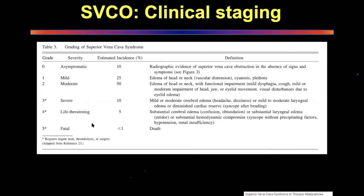In grades four and five you do not go for diagnosis first — you sort out the SVC first. The patient doesn't give you enough time to do a biopsy and get histology. This is a slow insidious growth that suddenly reaches a critical point. These patients may not present while mildly or moderately symptomatic and can arrive acutely in the emergency with severe shortness of breath, severe cerebral edema, headache, and critical illness. The first thing after CT scan is to take them to radiology and place an SVC stent — that can save the patient's life.